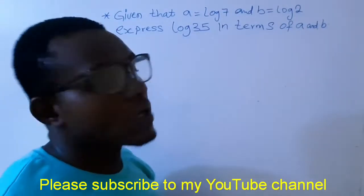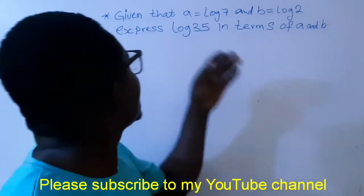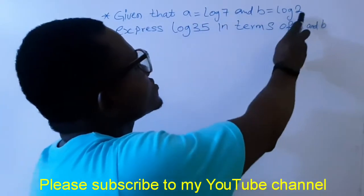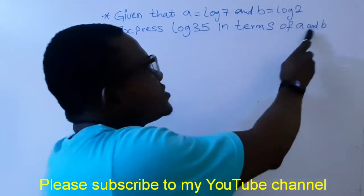I want to quickly show you how to solve this question. The question says, given that A equals log 7 and B equals log 2, express log 35 in terms of A and B.